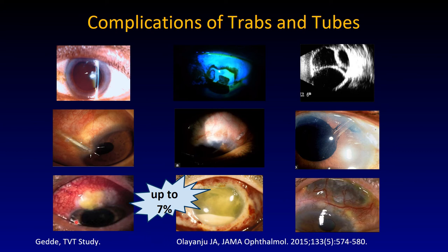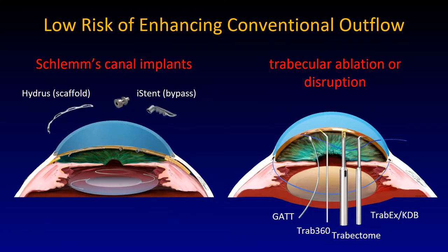The epibulbar glaucoma surgeries are riskier. But there is news — the Schlemm's canal implants: the Hydrus, the iStent second generation, first generation. They are placed from the inside, ab interno, through the meshwork to allow better flow. Something potentially better is not leaving an implant behind, since biofilms can coat these implants and occlude the lumen, there can be fibrosis — basically, it's a foreign body in an eye, so why would the body not react to them?